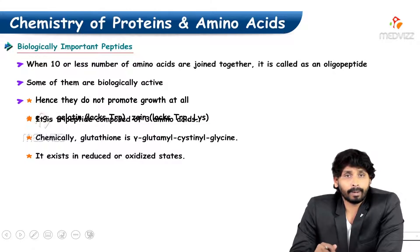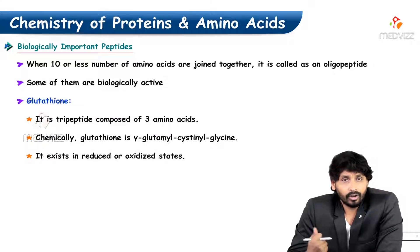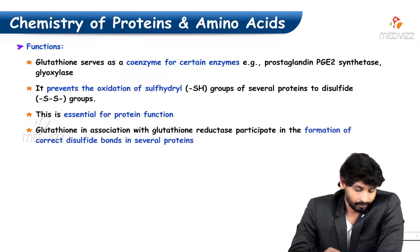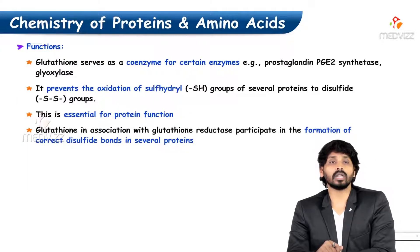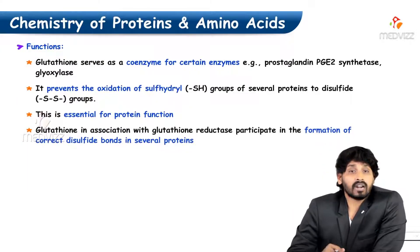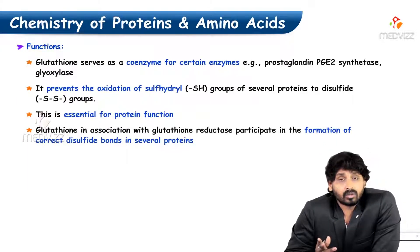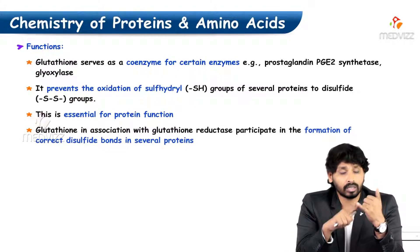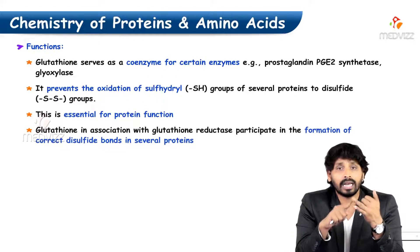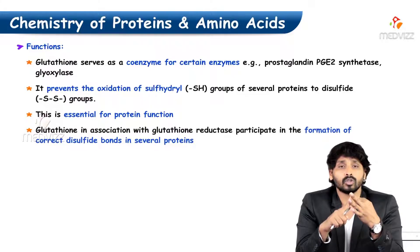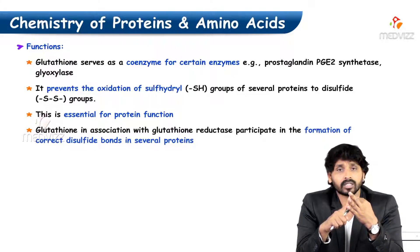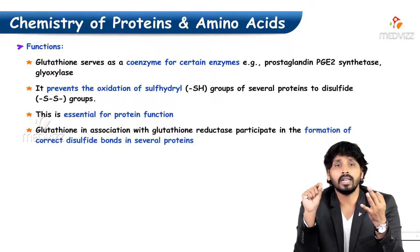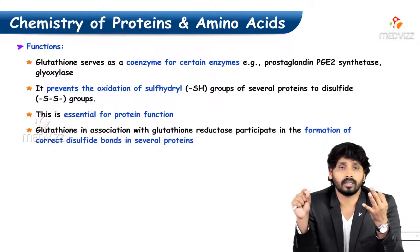Moving on to biologically important peptides — glutathione. It is a tripeptide, meaning it is made up of three amino acids. The composition is glutamate, cysteine, and glycine. Biologically, it is called gamma-glutamyl-cysteinyl-glycine.